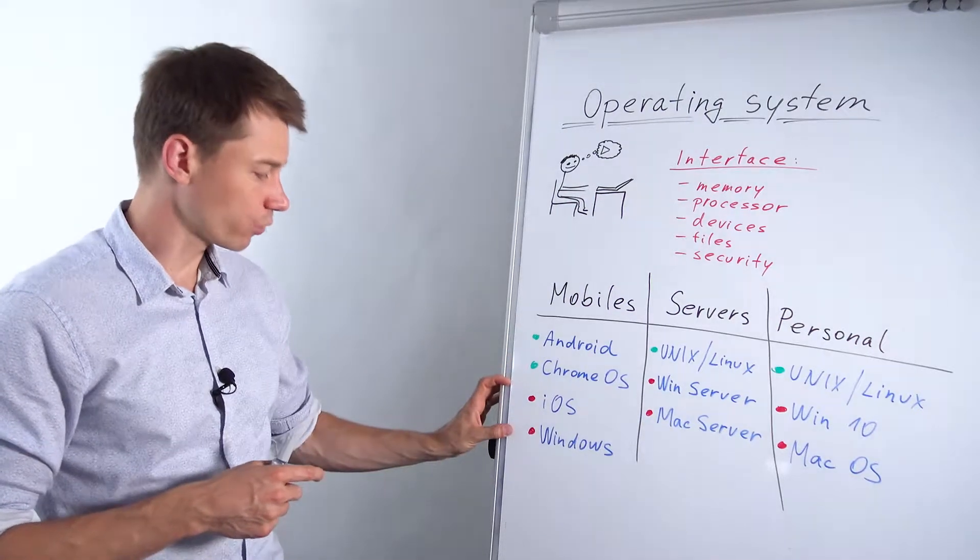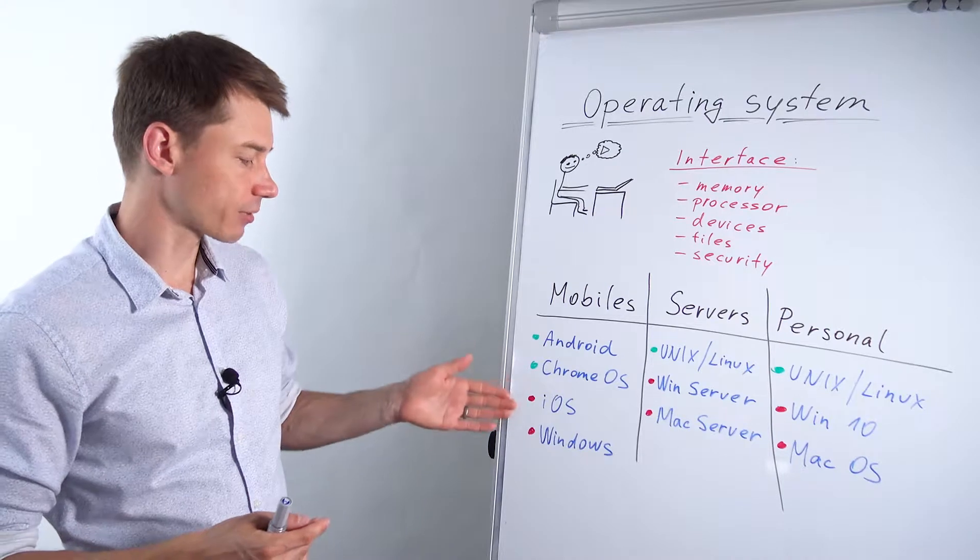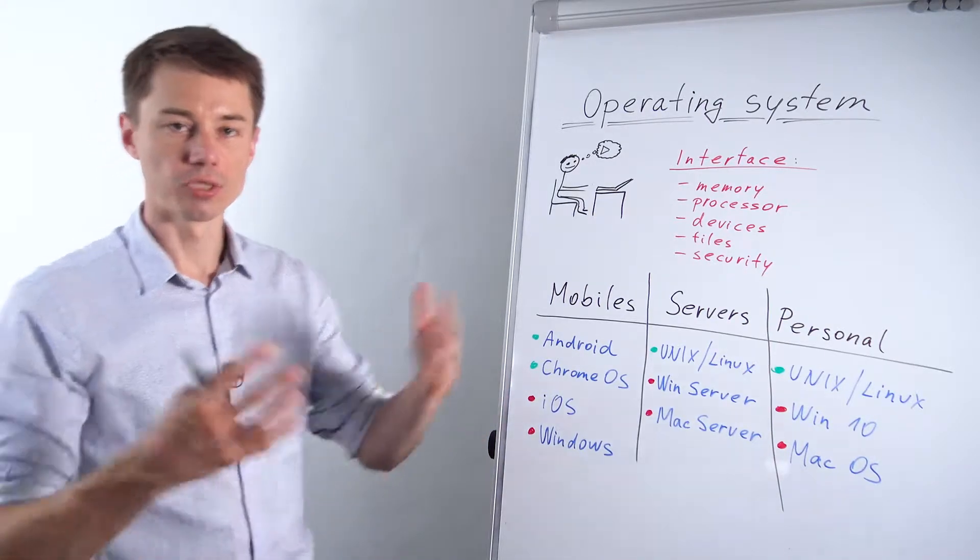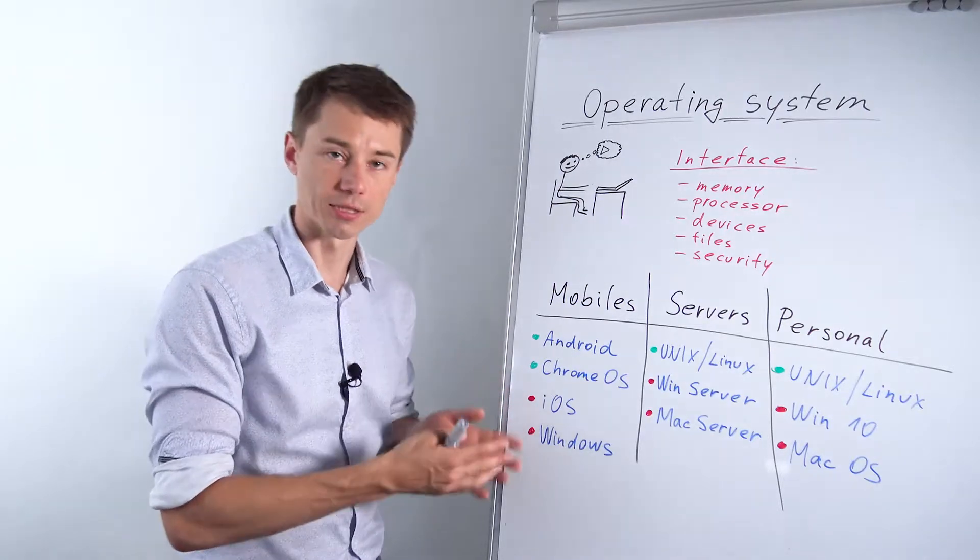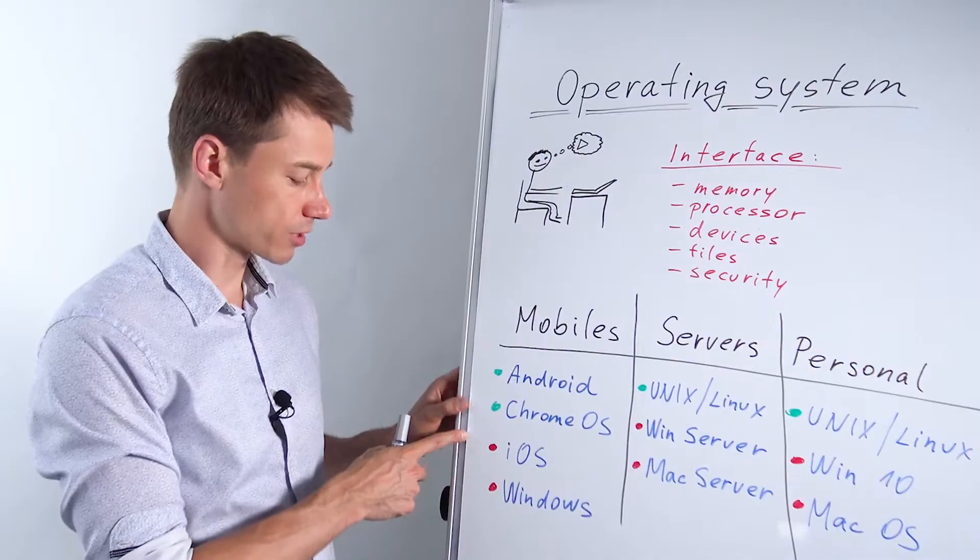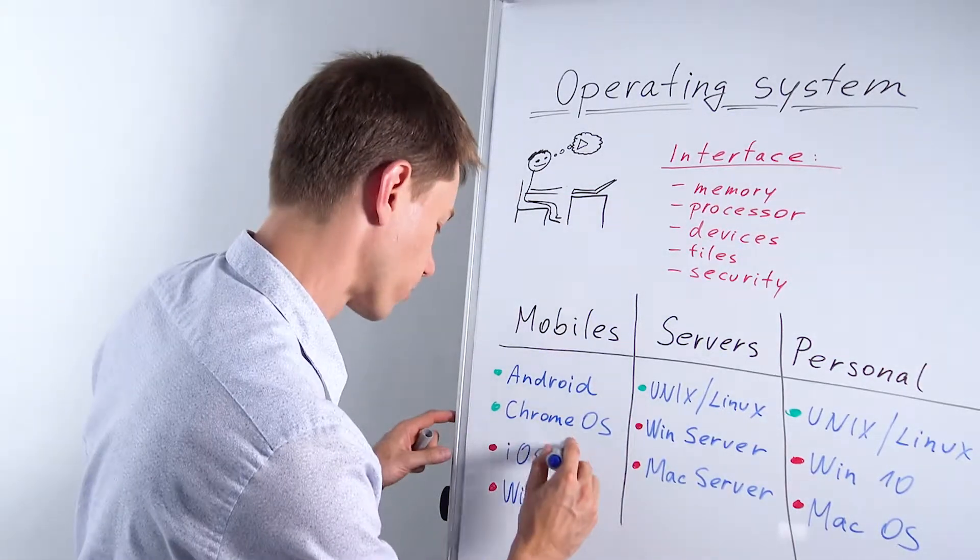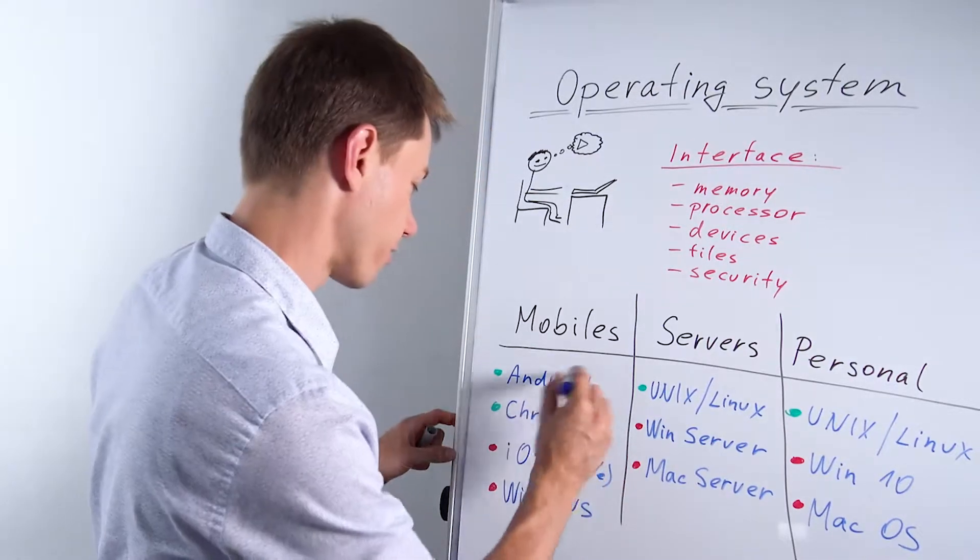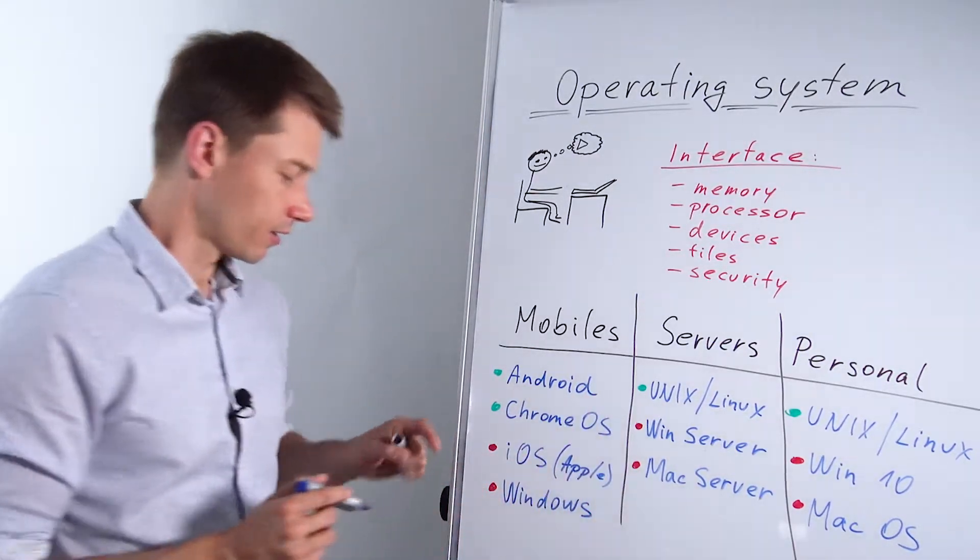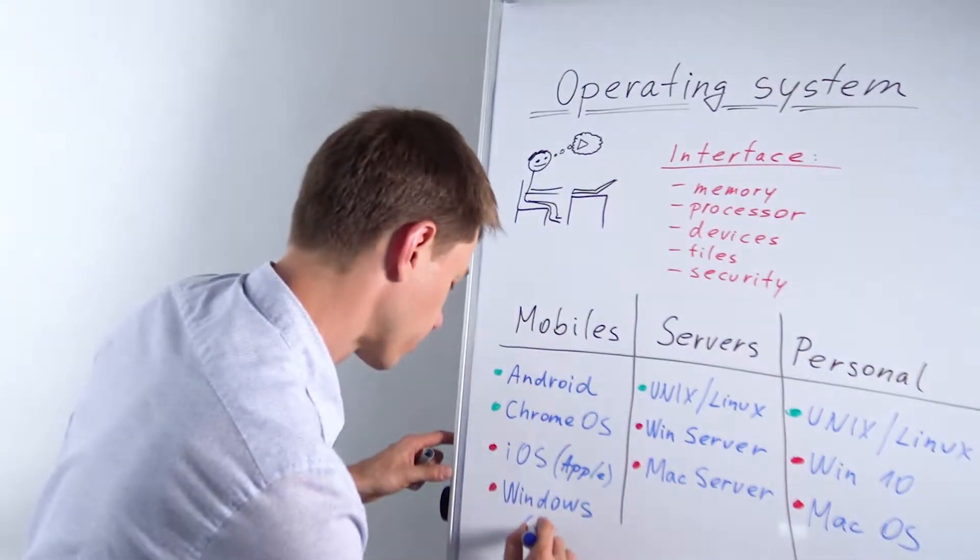And then we have two closed source operating systems which means these companies have never released the source code of these operating systems to public. For example iOS by Apple, I'll write it here so you guys don't forget Apple, and these two are by Google. So iOS and Windows by Microsoft, obviously Microsoft.